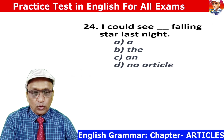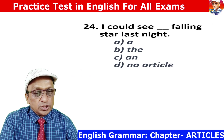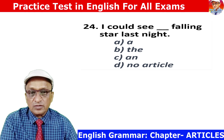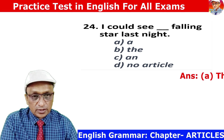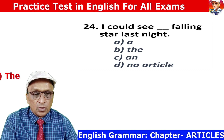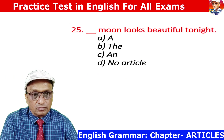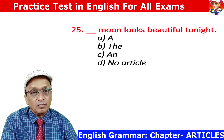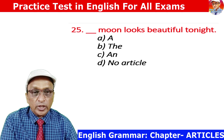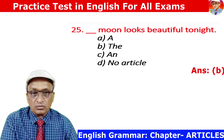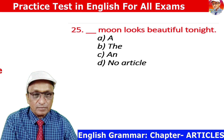Question 24: I could see a falling star. 'Falling' gives a consonant sound, so 'a falling star.' Answer is A. Question 25: The moon looks beautiful tonight. The moon is a unique object, that is why THE is used. Answer is B.